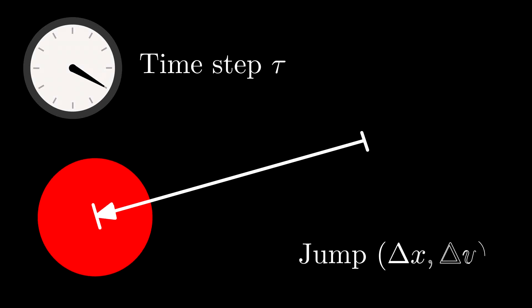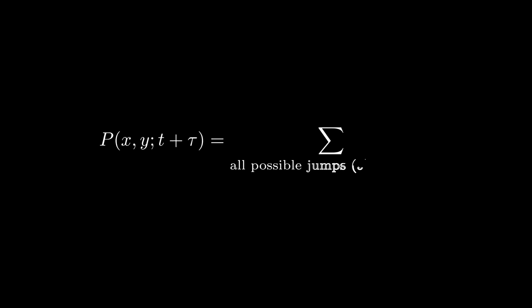Let us start by writing down the continuity equation that expresses that the probability to find the particle at x y at time t plus tau must be the sum of the probabilities that the particle was at x minus delta x and y minus delta y, times the probability that it jumped in the direction delta x delta y, summed over all possible jumps. We will denote the probability distribution of the jumps as P sub j.